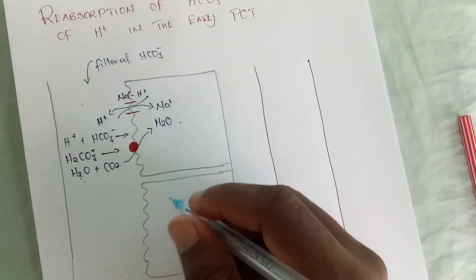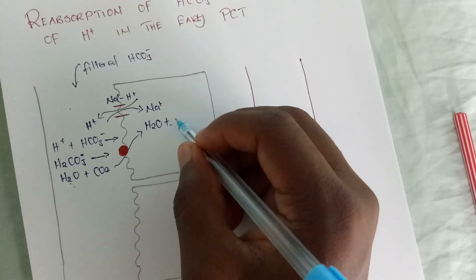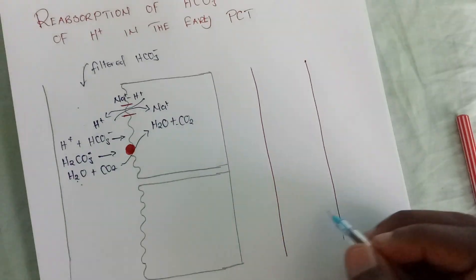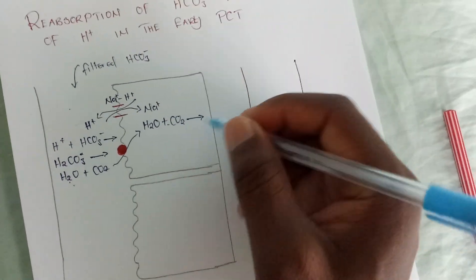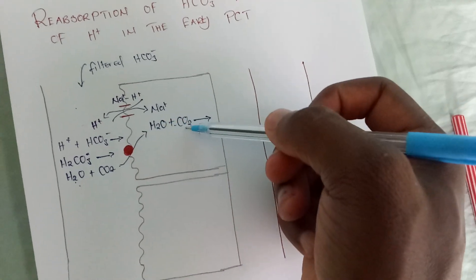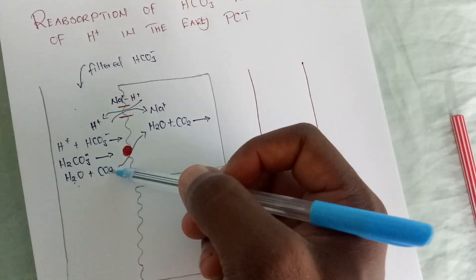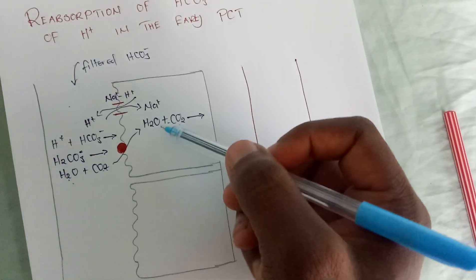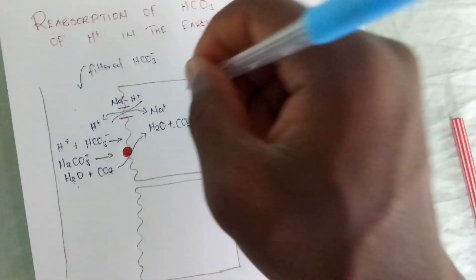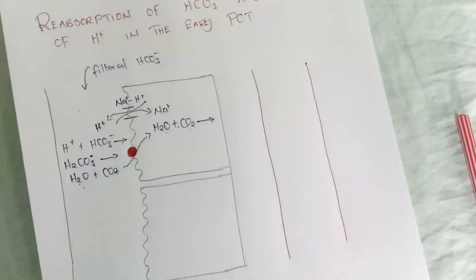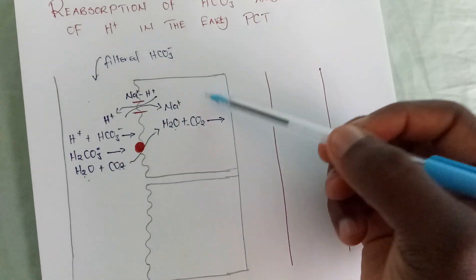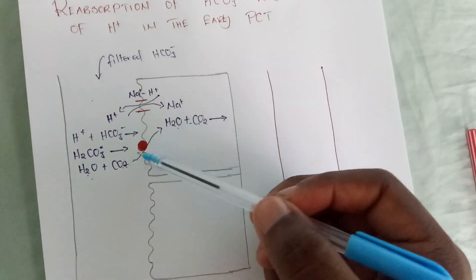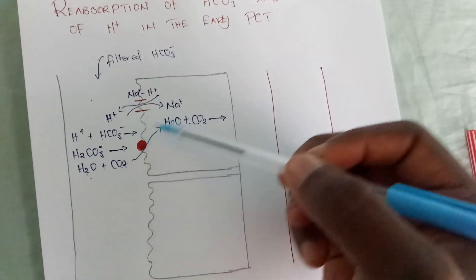Water and carbon dioxide diffuse into the cell — H₂O plus CO₂. Once inside the cell, they will react again in a reverse reaction, reforming weak carbonic acid. This time, the reaction occurs in the presence of an intracellular carbonic anhydrase enzyme, as opposed to the brush border carbonic anhydrase enzyme used in the lumen.